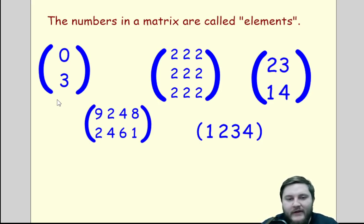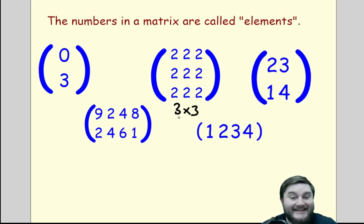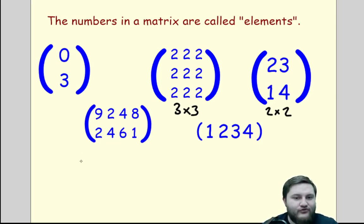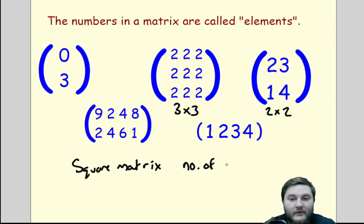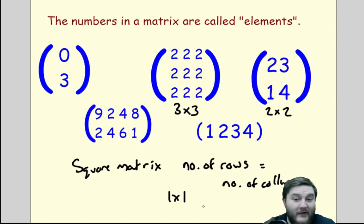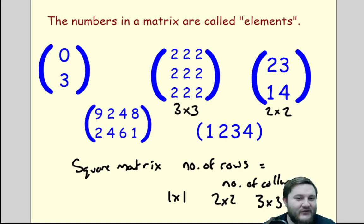Now there are a couple of other things we need to know about matrices. If we look at this 3 by 3 matrix, it's unique — when the number of rows and the number of columns are the same, we call it a square matrix. You'll see a lot of square matrices in GCSE Further Maths because 2 by 2 is very common. A square matrix is when the number of rows equals the number of columns — so a 1 by 1, 2 by 2, 3 by 3, and so on — those are all square matrices.